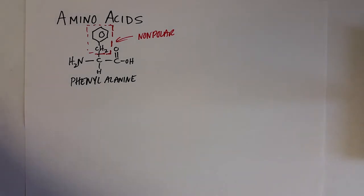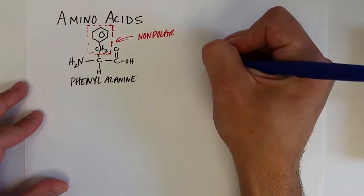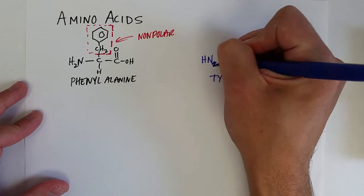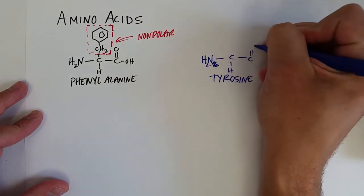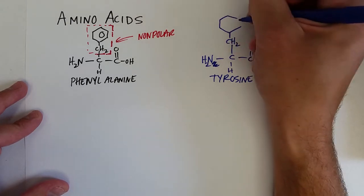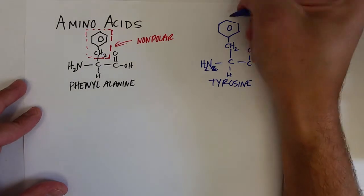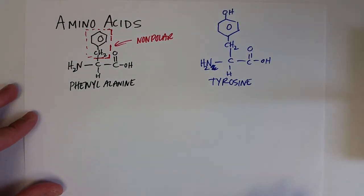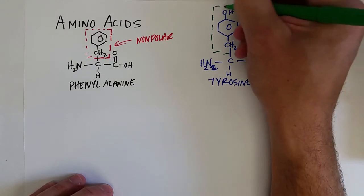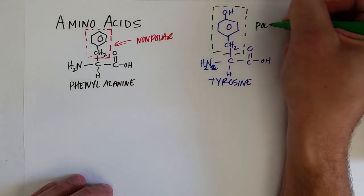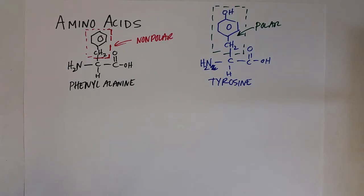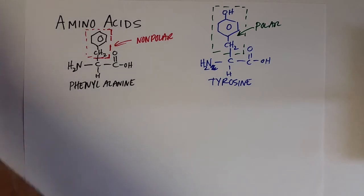You can also have polar amino acids, like tyrosine, which is very similar in structure to phenylalanine. It has the amine group and the carboxylic acid group, and it starts with a CH2 group and an aromatic ring, but it also has an alcohol group — a hydroxyl group — coming off of that aromatic ring. Since it has that polar hydroxyl group, tyrosine is classified as a polar amino acid.